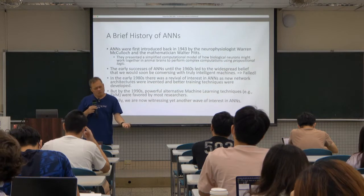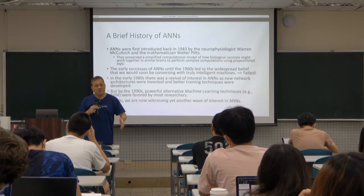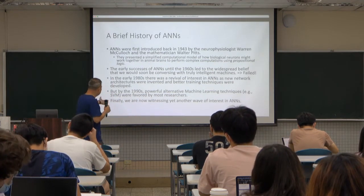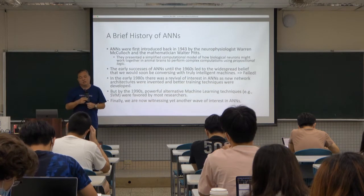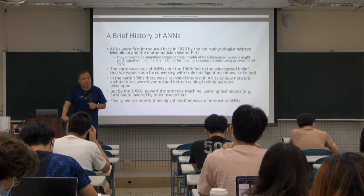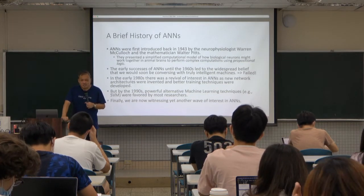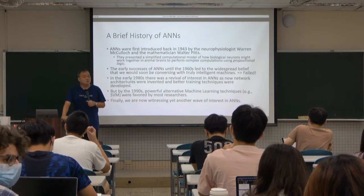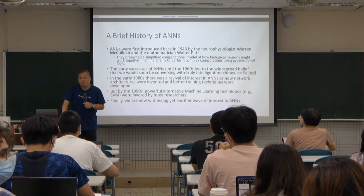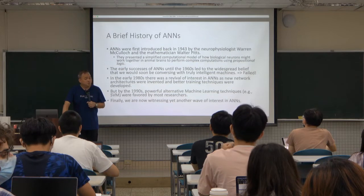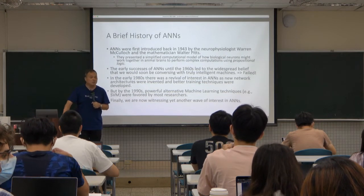So people thought: why do we need to use artificial neural networks? So people gave up artificial neural networks and tried different variations of machine learning algorithms. There are so many different machine learning algorithms out there. In the previous slides we talked about linear regression, polynomial regression — you can consider them as machine learning algorithms. There are other famous ones such as decision tree, naive Bayes methods, as well as SVM.